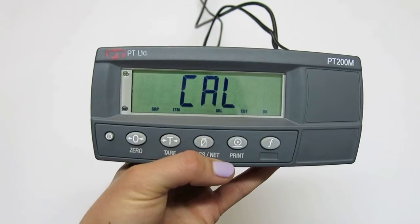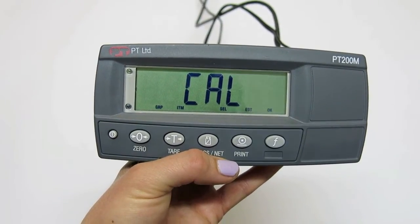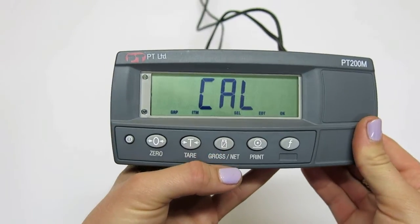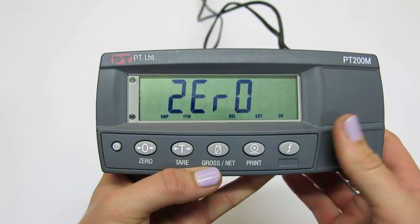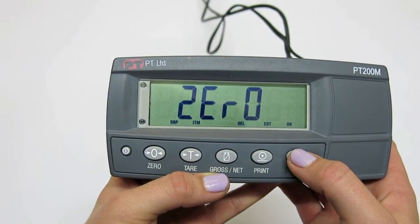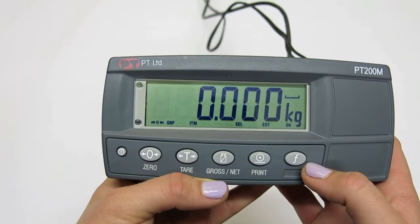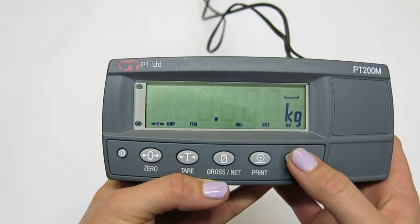For regular calibration, first find the zero option in the calibration menu and press OK or the F button to select. Ensure there is no excess weight on the scale and press OK again to set this as the new zero offset.